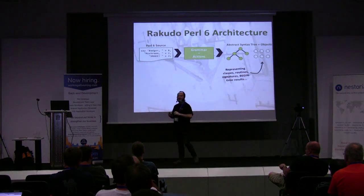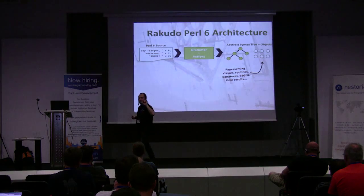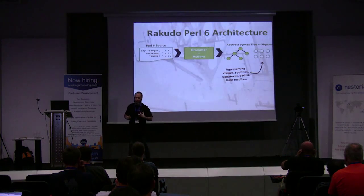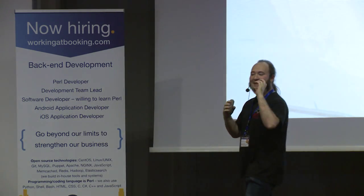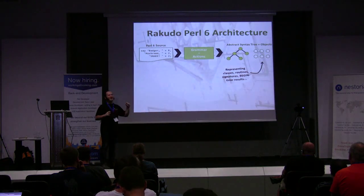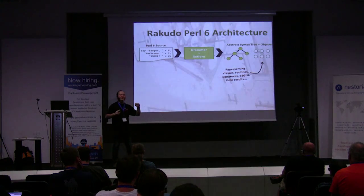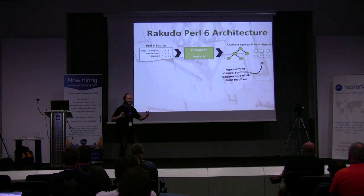There's another thing we build up as we parse your program. There are two things in it that are interesting: the executional code — loops, conditionals, variable accesses, method calls, operators — and surrounding it all, lots of declarations: class declarations, method declarations, subroutine declarations. For every one of those, we actually make an object to represent it. These objects have a scary-sounding name — we call them meta-objects. All a meta-object is is an object that represents a piece of your program. So next time somebody tells you meta-programming is scary, say no — it's just talking about your program with objects, just like you talk about HTML using the DOM.